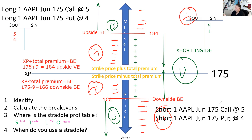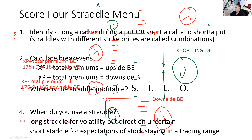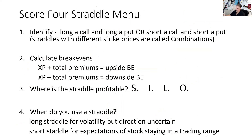Get your four points on your Series 7 if you encounter a straddle. Here's what we just covered: we identified the straddle, calculated the break-evens, determined where it was profitable using SILO, and determined when we used it — those were our Score Four More for the Series 7 as it relates to a straddle.